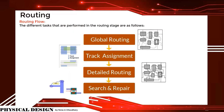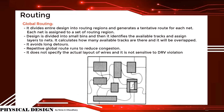The different tasks performed in the routing stage are: first, global routing; then track assignment; then detailed routing; and finally search and repair. Global routing divides the entire design into routing regions and generates a tentative route for each net. Each net is assigned to a set of routing regions. The design is divided into small bins called G-cells, which identifies available tracks and assigns layers to nets. It calculates available tracks, avoids long detours, performs repetitive global route runs to reduce congestion, does not specify the actual layout of wires, and is not sensitive to DRV violations.